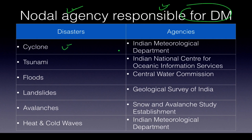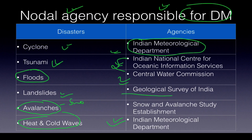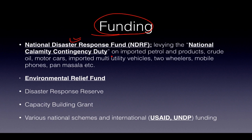Key nodal agencies for disaster management in India: for cyclones and heat/cold waves, the Indian Meteorological Department handles forecasting; for tsunamis, the Indian National Centre for Ocean Information Services (INCOIS); for floods, the Central Water Commission; for landslides, the Geological Survey of India (GSI); for avalanches, the Snow and Avalanche Study Establishment. Funding comes from the National Disaster Response Fund, national calamity contingency duty on imports, environmental relief funds, disaster response reserves, capacity building grants, and international funds from USAID and UNDP.